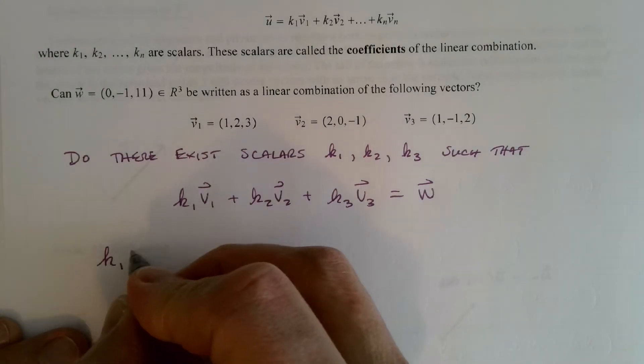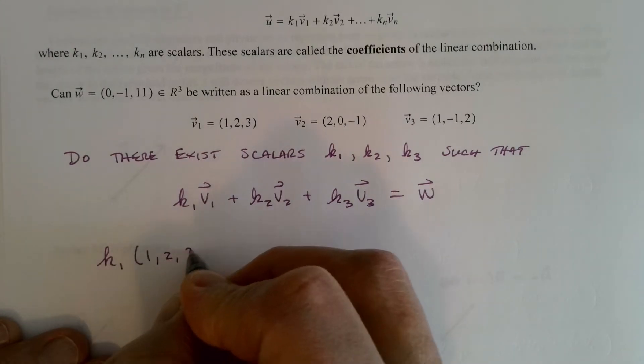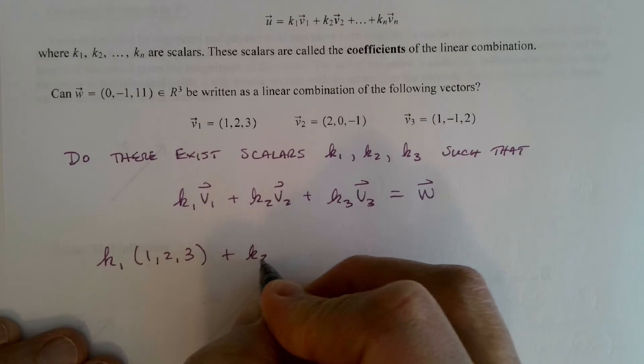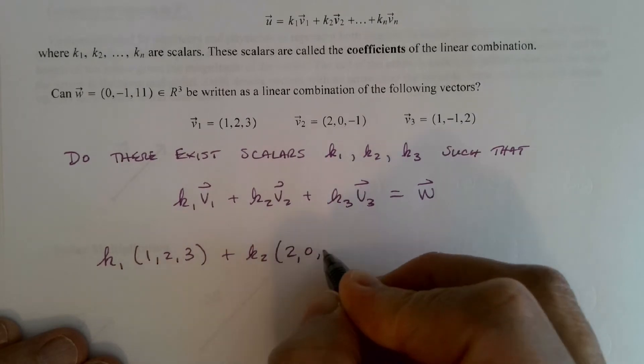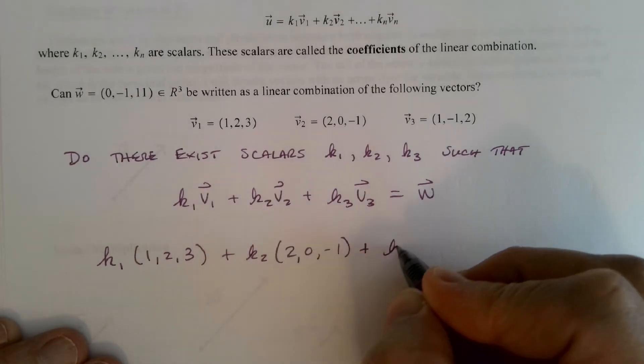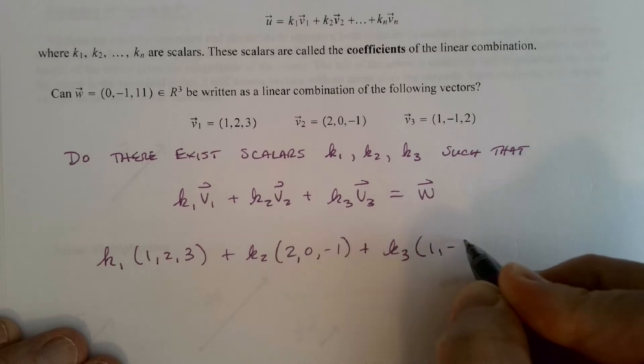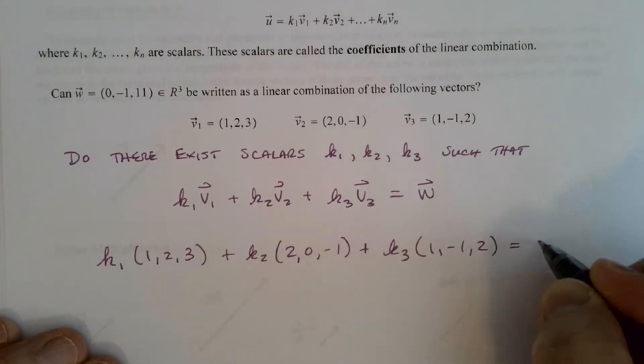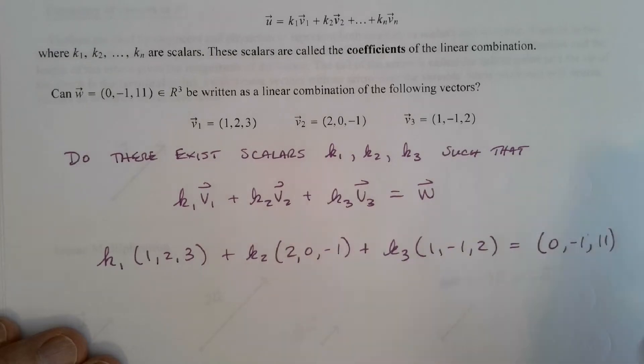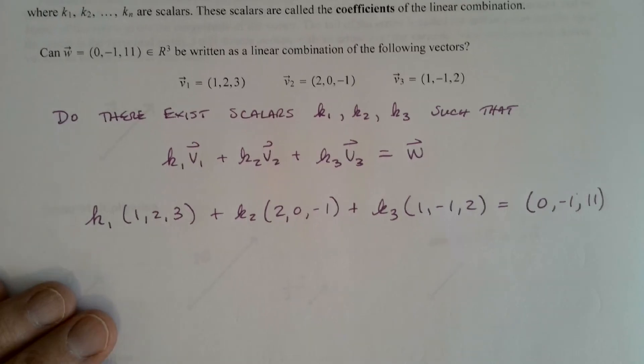What I would have, k1 times v1, so v1 is the vector 1, 2, 3. k2, v2 is 2, 0, negative 1, and v3 is 1, negative 1, 2. Vector w again, 0, negative 1, 11. So getting all these from the information that's given.